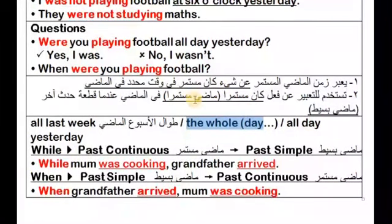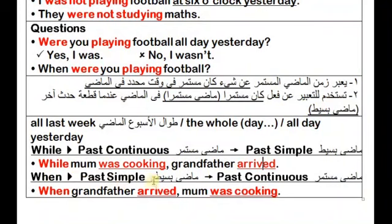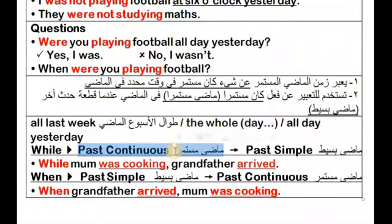يُستخدم أيضاً للتعبير عن حدث كان مستمراً في الماضي عندما قطعه حدث آخر. While mom was cooking, grandfather arrived — بينما والدتي كانت تطبخ، جاء جدي. الحدث الأول المستمر = ماضي مستمر، الحدث الثاني اللي قطعه = ماضي بسيط. لو while في بداية الجملة بعدها ماضي مستمر.